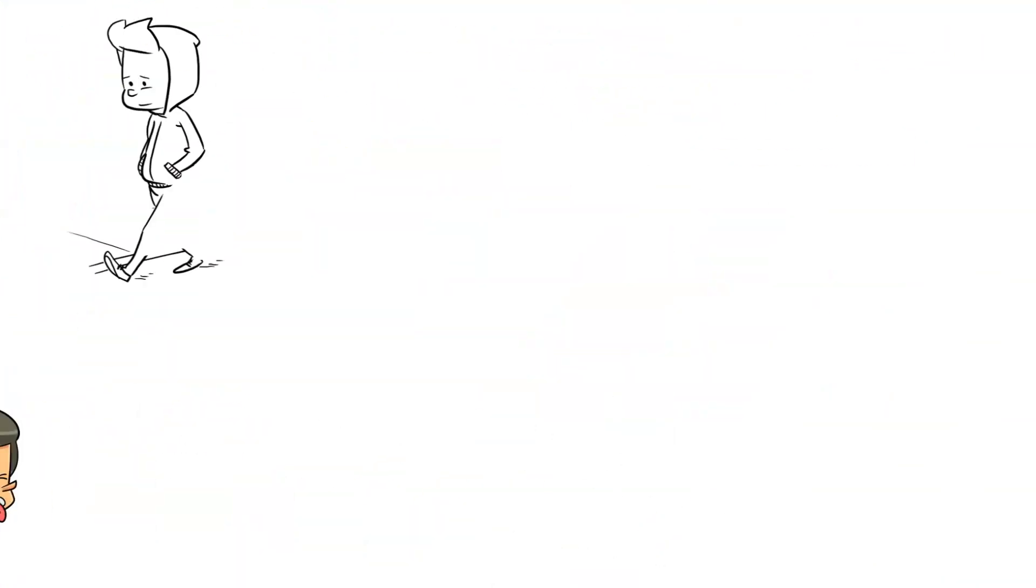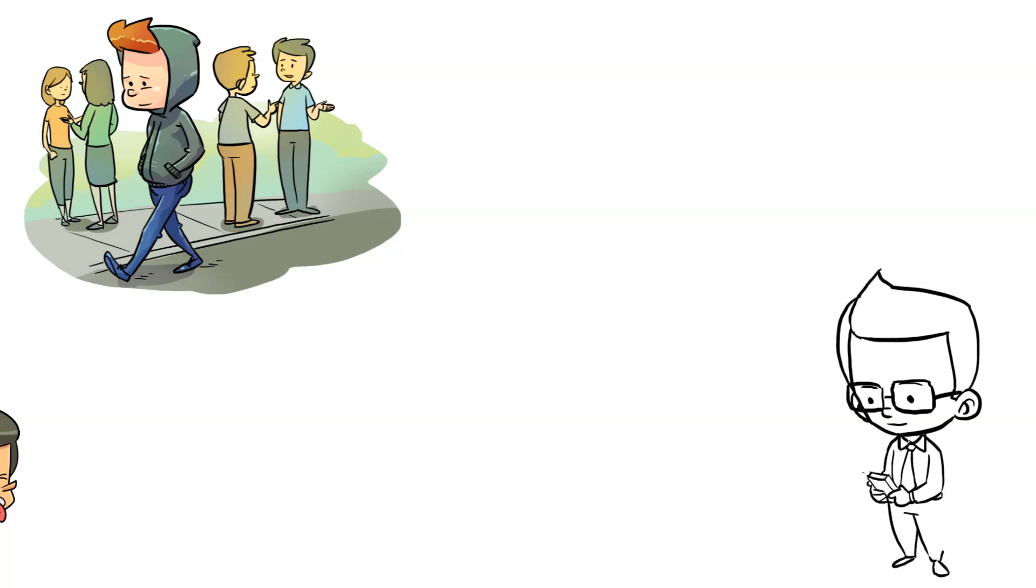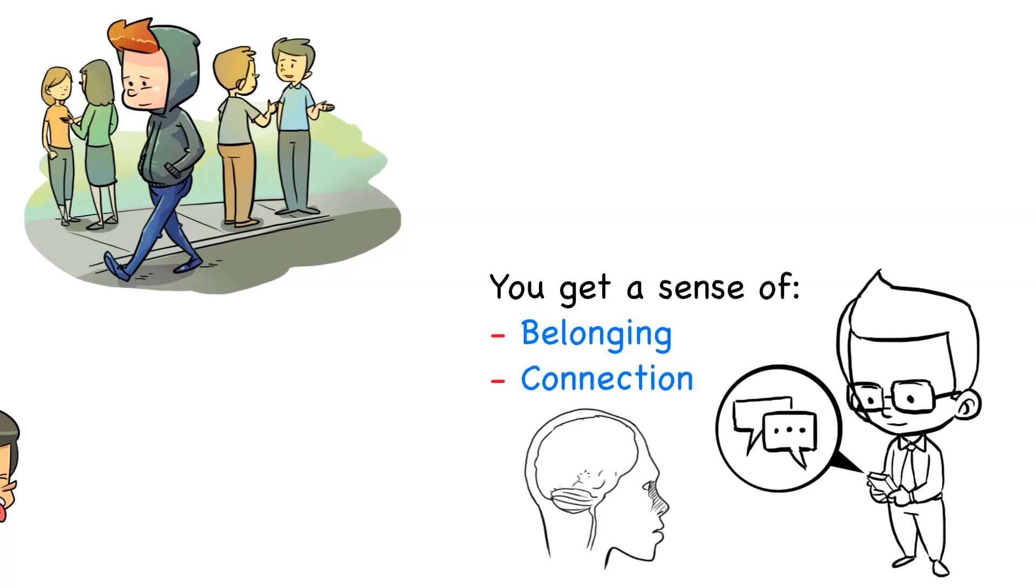For example, let's say that you feel lonely and want to feel connected with other people. Your brain will immediately start to seek for a solution to this problem. So, you decide to message five friends on Instagram. As soon as they respond, you get a sense of belonging and connection which triggers the release of reward chemicals in your brain.